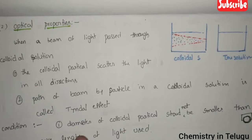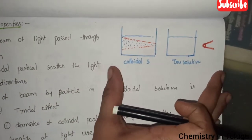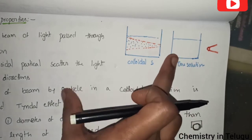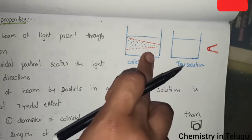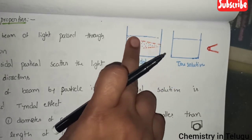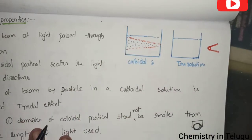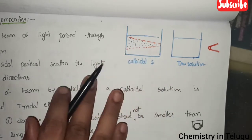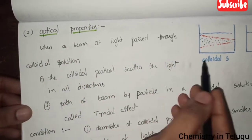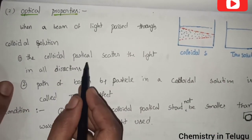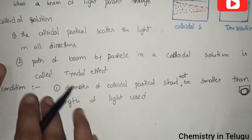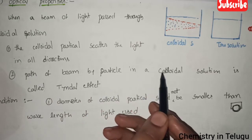The second property is the optical property. We have two beakers. If you have a true solution, you will pass a beam of light through it. The beam of light will scatter in all directions when passed through a colloid solution. This path of the beam by the colloid particles is called the Tyndall effect.